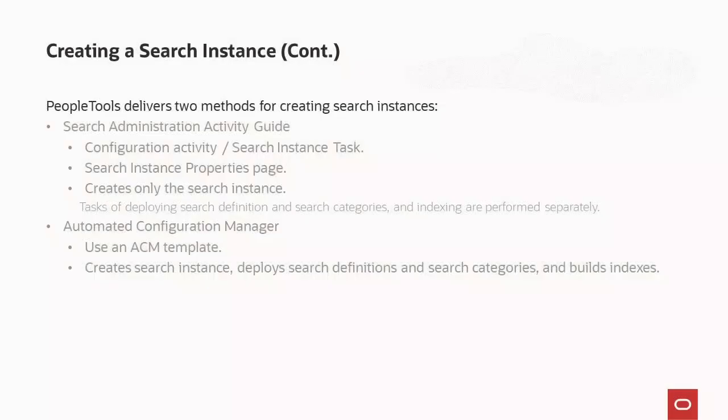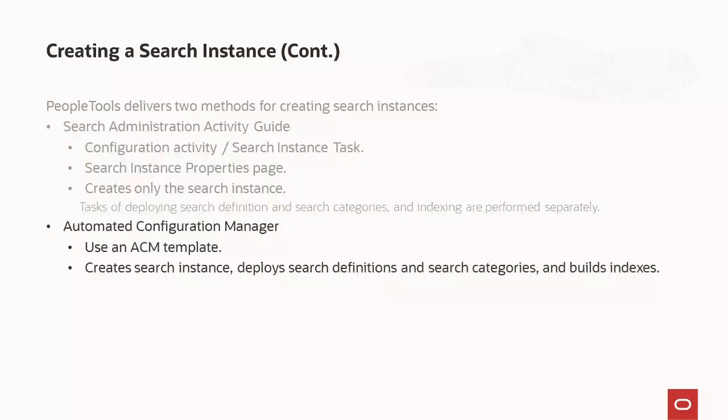There are two ways to create an OpenSearch search instance. The search administration activity guide configuration activity using PIA features a search instance task, where you use the search instance properties page to create the search instance. Using the Automated Configuration Manager, ACM, enables you to automate the configuration of an OpenSearch instance. You can also use ACM to automate the deploying of search definitions and categories, as well as automate indexing.